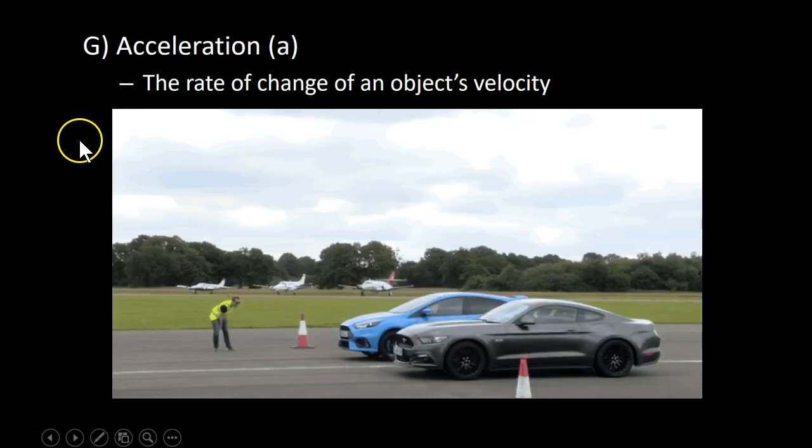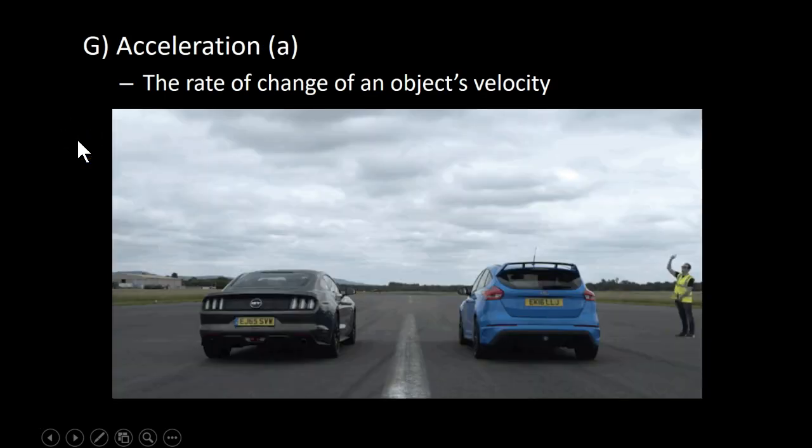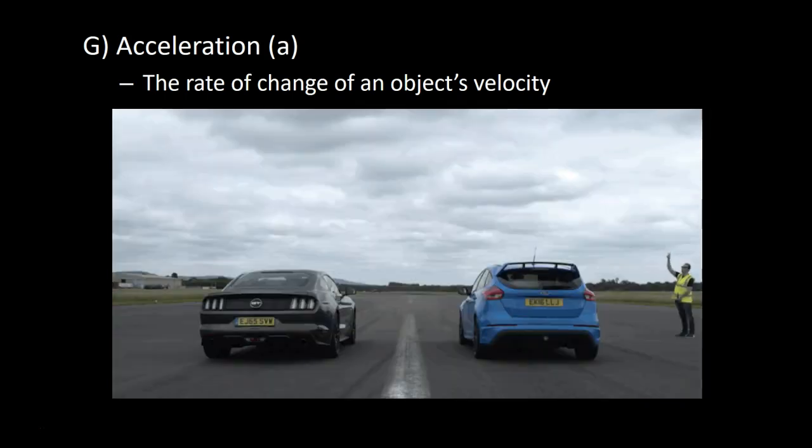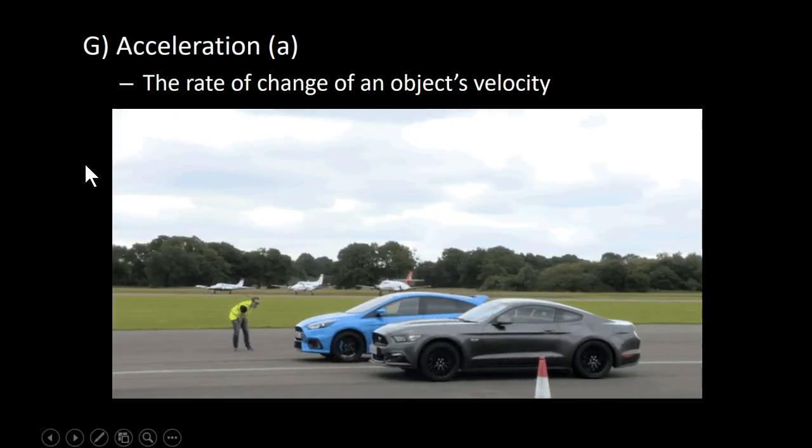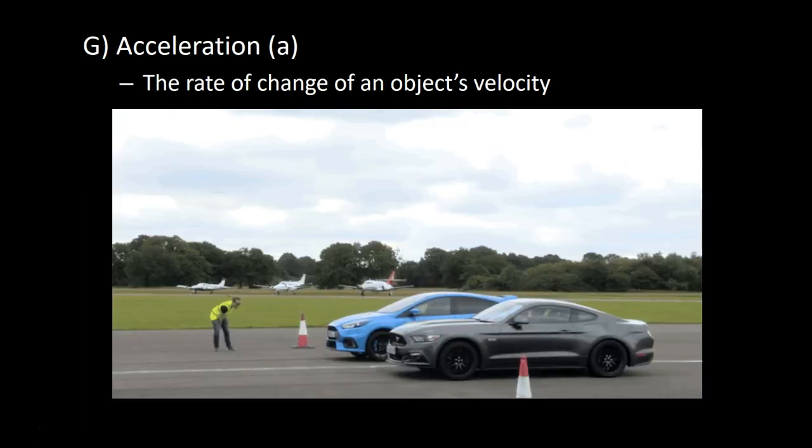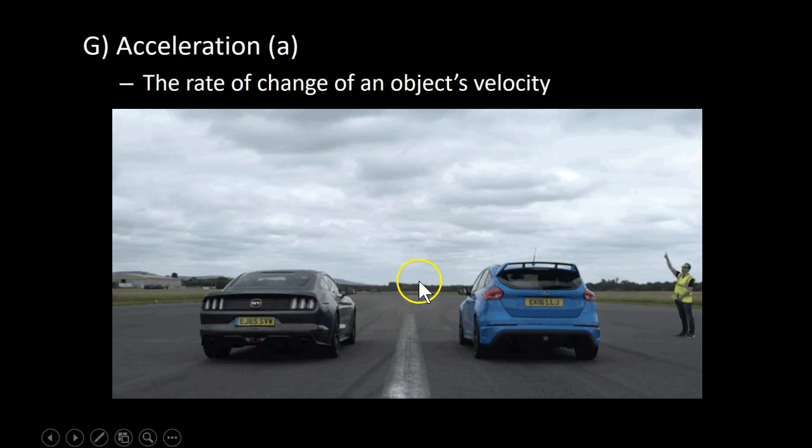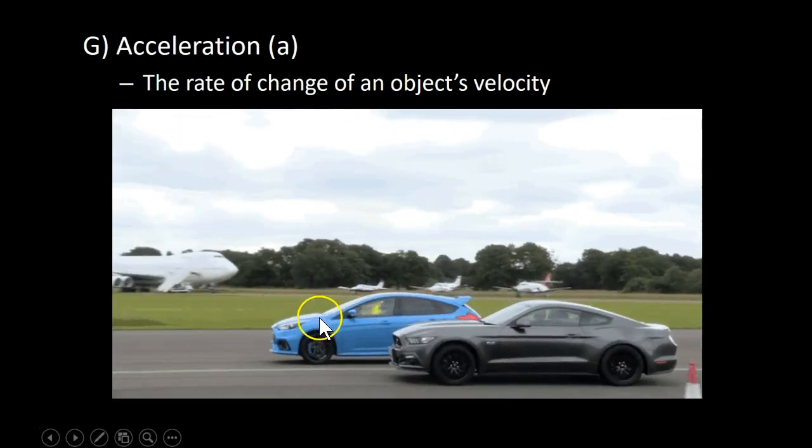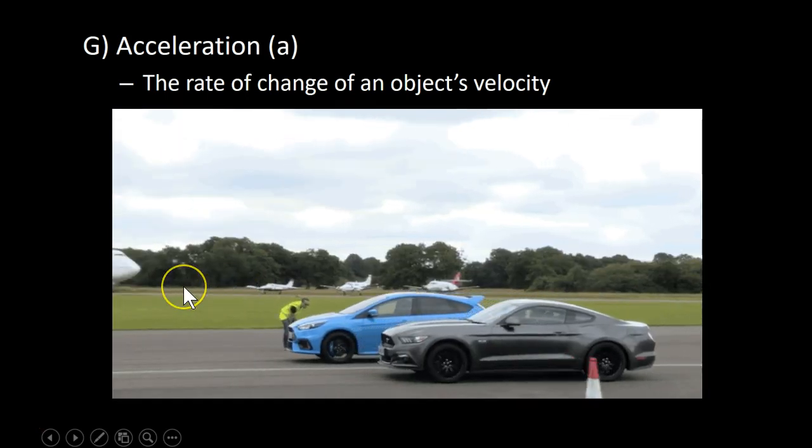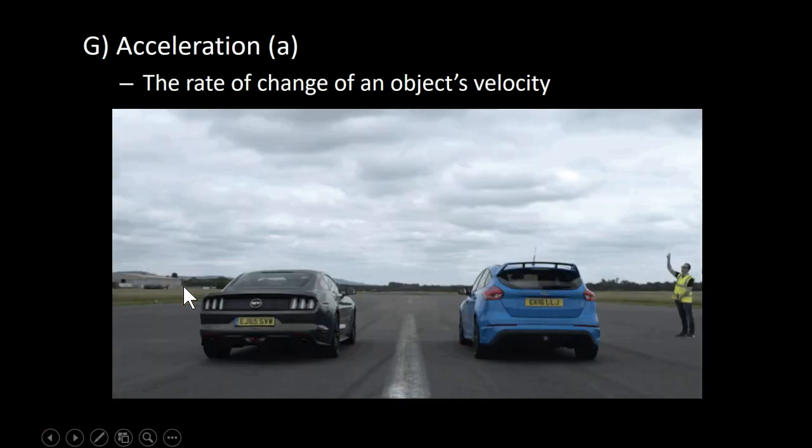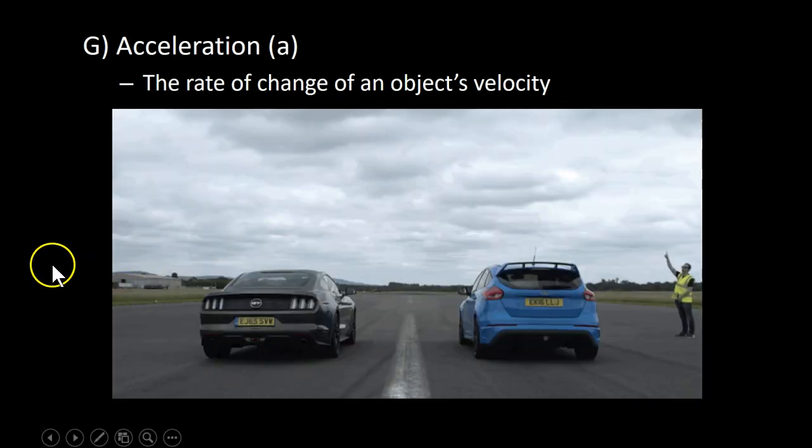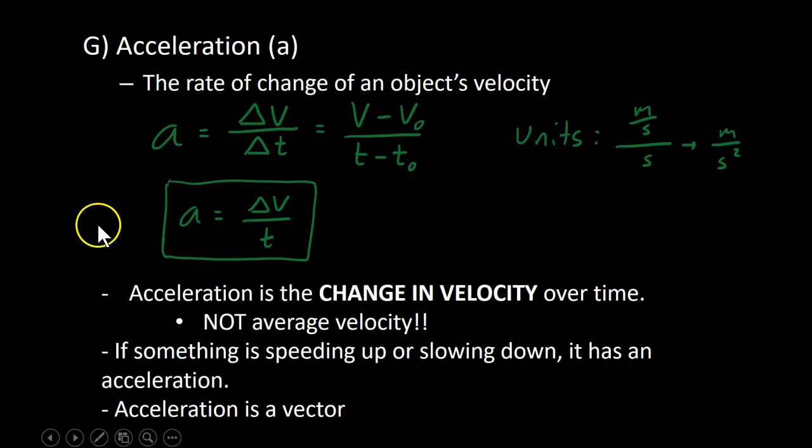Acceleration. We're almost done. Acceleration is the rate of change of an object's velocity. Think of speeding up and slowing down. So we have this gif right here. We have two cars. The blue car increases its velocity more than the black car. You say that the blue car has a greater acceleration, because at the very end of that frame right there, the blue car is ahead. It must have a larger velocity, at least in that short time period. It accelerated more. So it's the rate of change of an object's velocity.